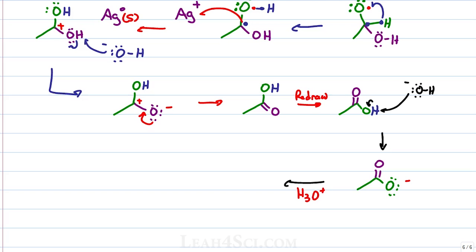This gives me a carboxylate anion with a negative charge which we neutralize by adding H3O plus into solution. When we wrote out the reagent, we showed acid as step 2